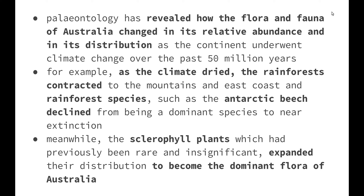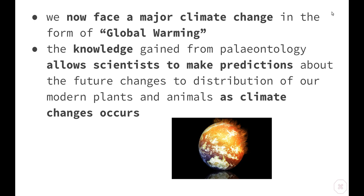As the climate dried, the rainforest contracted to the mountains and the east coast, and rainforest species such as the Antarctic beech declined from being a dominant species to near extinction. Meanwhile, the sclerophyll plants which had previously been rare and insignificant expanded their distribution to become the dominant flora of Australia.